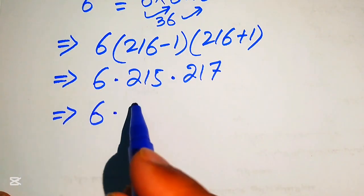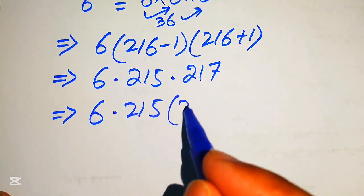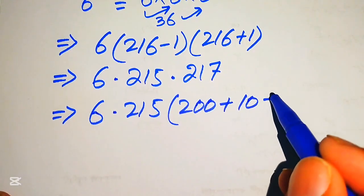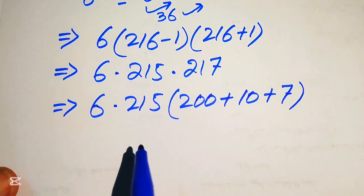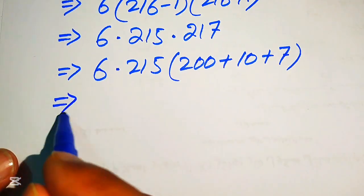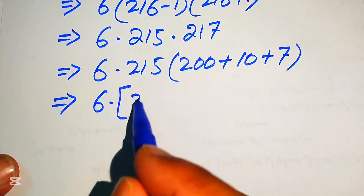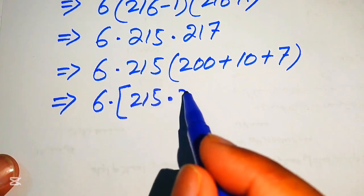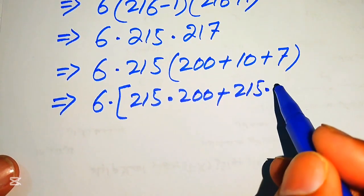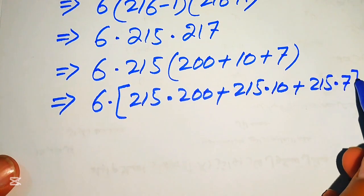Now we need to multiply 215 by 217. We rewrite the expression as 6 times 215 times 217. To make the multiplication easier, we break 217 into 200 plus 10 plus 7, and distribute: 215 multiplied by each part.